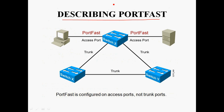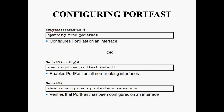Describing Port Fast. The port fast command can be used only on access ports; it cannot be used on trunk ports. In all Cisco Catalyst switches, port fast is enabled by default — we do not need to configure it manually. To configure port fast on an interface, go to interface mode and give 'spanning-tree portfast'. To enable it globally on all non-trunking interfaces, use 'spanning-tree portfast default' in global mode. To verify port fast, use 'show running-config interface [interface]'.